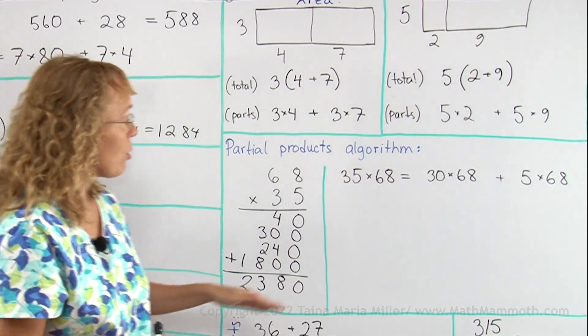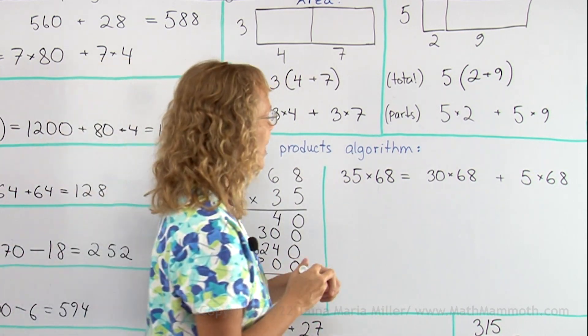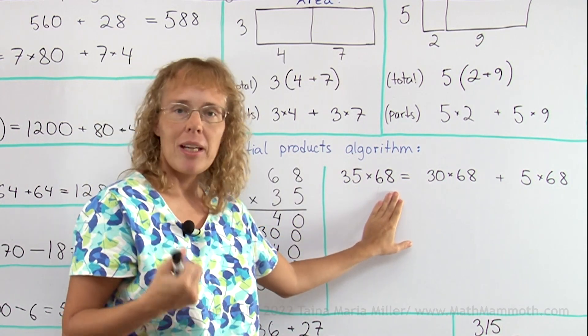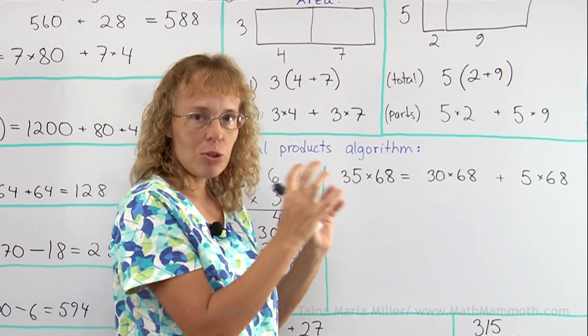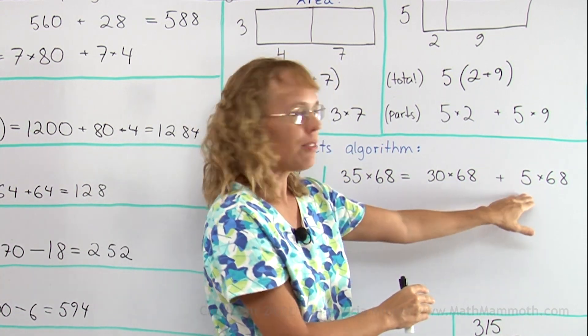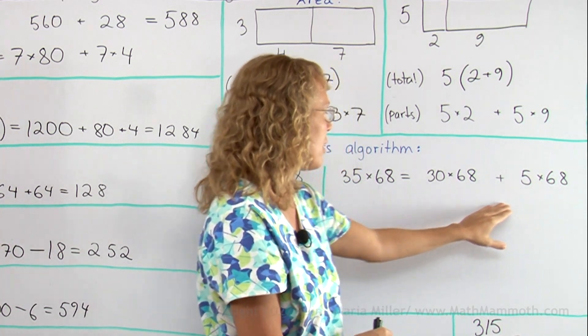And now I will show the same here, breaking it into parts. 35 times 68. First, I will break it into two parts, two calculations, by writing 35 as 30 and 5. So I have 30 times 68 and 5 times 68.